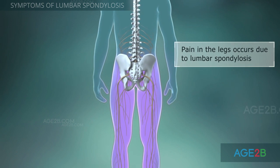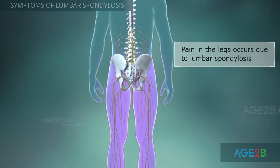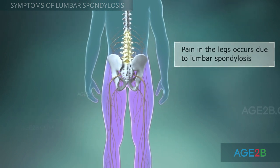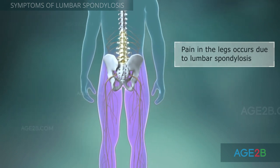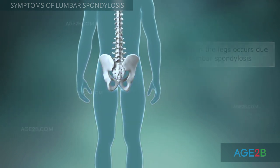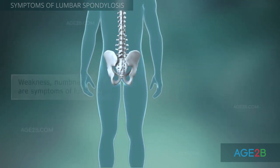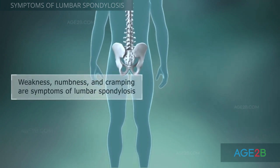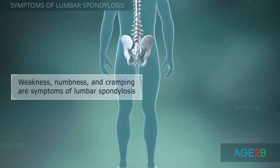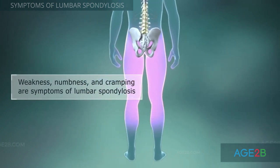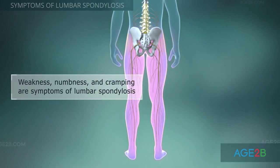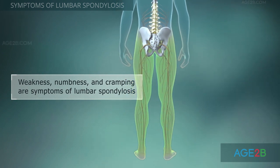Pain in the legs may also be a symptom of lumbar spondylosis. It occurs due to compression of nerves which extend into the legs through the lumbar portion of the spine. Besides pain, lumbar spondylosis can cause weakness, numbness, and cramping in the buttocks, legs, or feet.